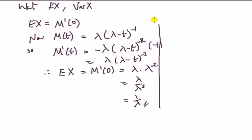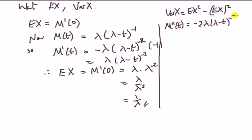Next, the variance of X equals the expected value of the second moment minus the first moment squared. We've got the first moment; now we need the second moment. For that we need the second derivative of the MGF. Applying the chain rule: -2λ(λ-t)^(-3) times -1.